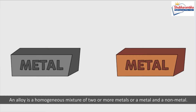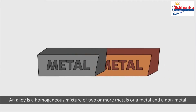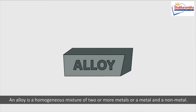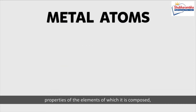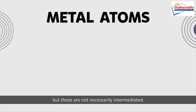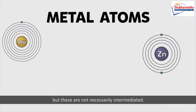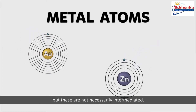Alloys: An alloy is a homogeneous mixture of two or more metals, or a metal and a non-metal. It possesses in general the properties of metals as a class, and in particular the general properties of the elements of which it is composed, but these are not necessarily intermediate.